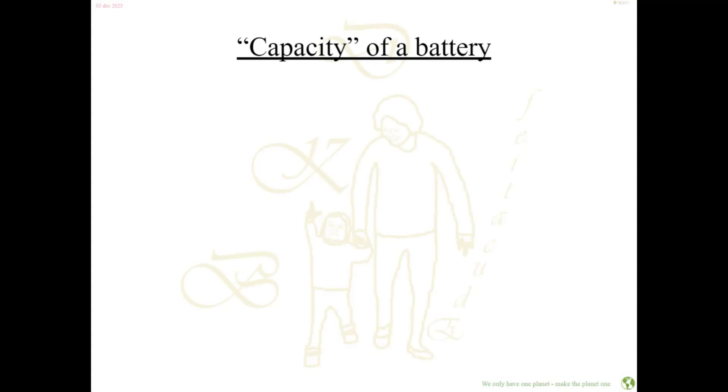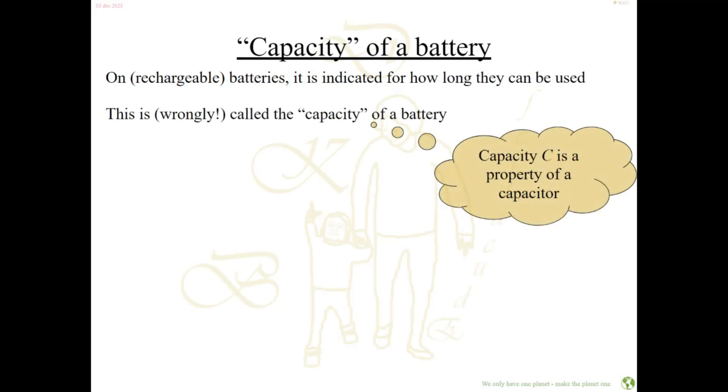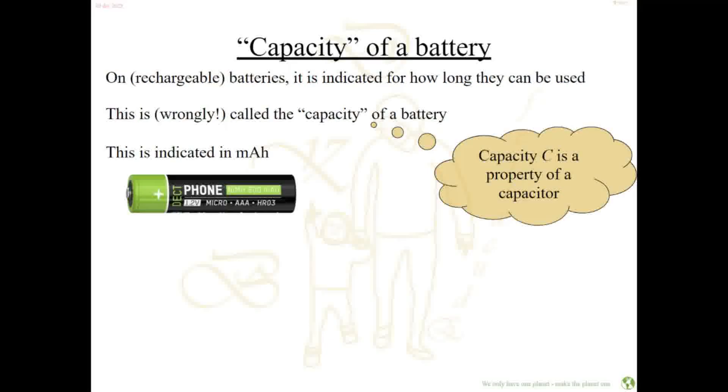There's one more thing we have to look at, which is very wrongly called the capacity of a battery. It's mostly put on rechargeable batteries but sometimes also on normal batteries. There's an indication of how long you can use that battery, indicated as capacity, but that's not really true. Capacity, with symbol capital C, is actually a property of a capacitor, not a battery. That capacity is indicated with mAh, which stands for milliamp hours.